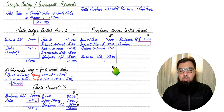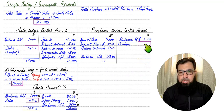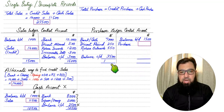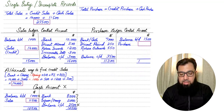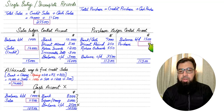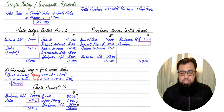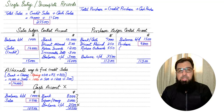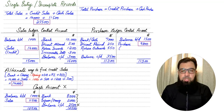Then we have Return Outward — whenever we return goods to a supplier, the liability goes down. If we balance this account, we can find the purchase figure. The greater side is the debit side, and if we deduct the opening balance of 1,500, we get the purchase figure.